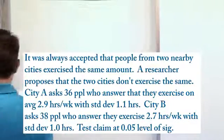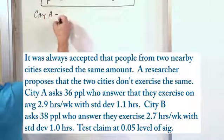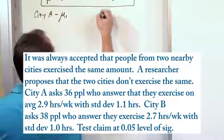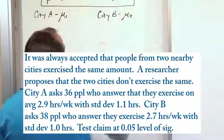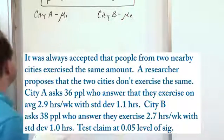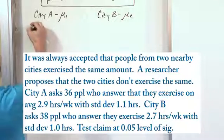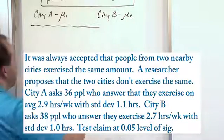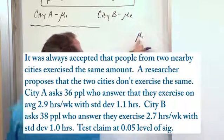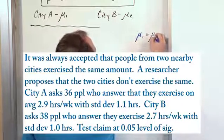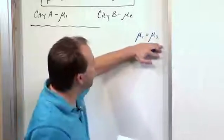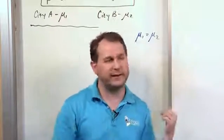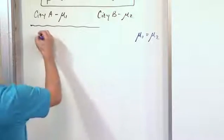So the way you look at that: first, we want to say City A — we're going to use mu1 to represent the number of hours that people in this city on average exercise. Then we're going to have City B, and we're going to use mu2 to represent how many hours per week the people in City B exercise. Now what we want to do is write down the null hypothesis. It tells you right there that it's been commonly accepted that people from the two nearby cities exercise the same amount, meaning the mean hours for City 1 equals the mean hours for City 2. This is essentially the null hypothesis.